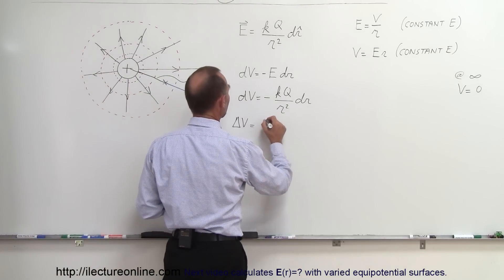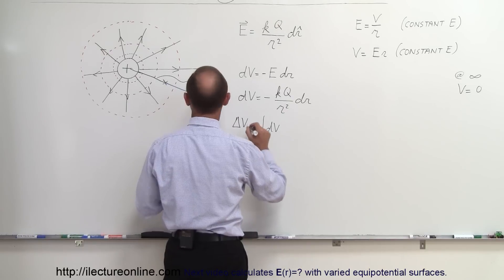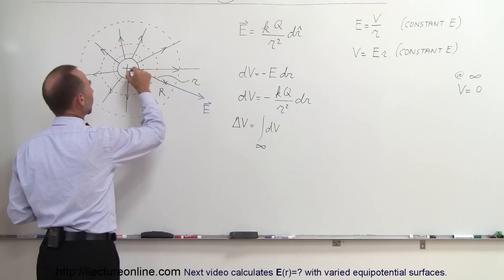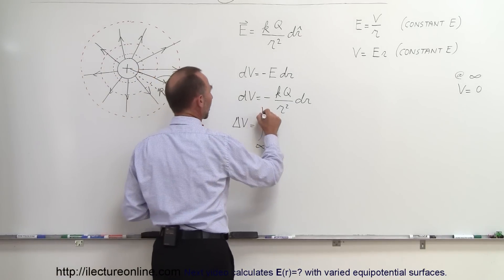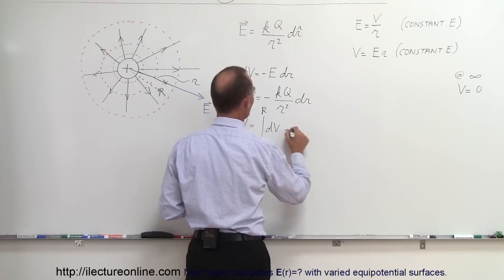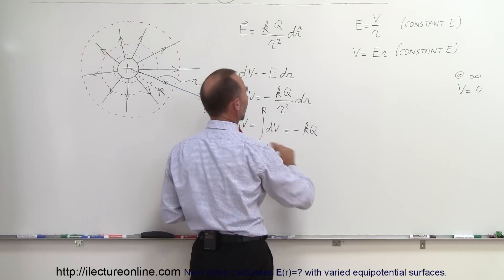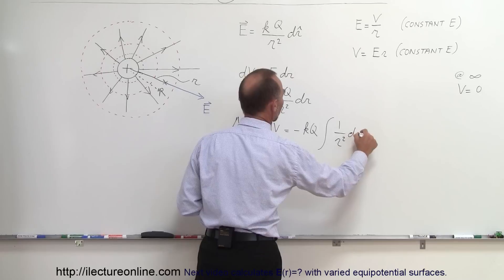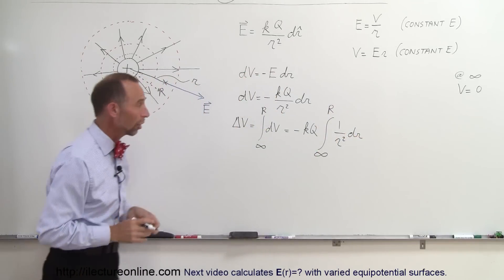We say this is equal to the integral of all the DV's going from infinity to some distance away from the center. Let's call this distance away from the center R. R is the distance from the center like that, so this would be equal to minus KQ, these are just constants, we can take outside the integral sign, times the integral of one over R squared DR going from infinity to some fixed point R away from the charge.